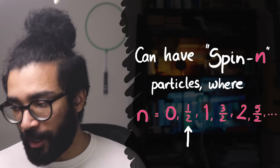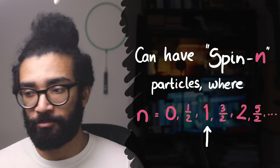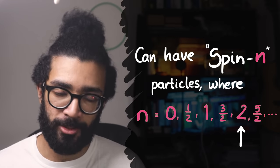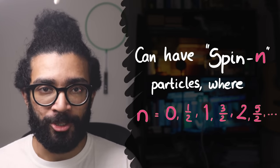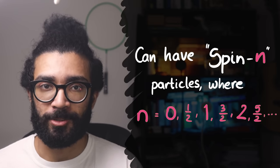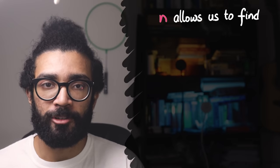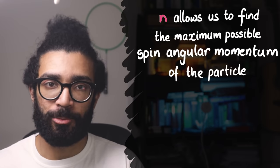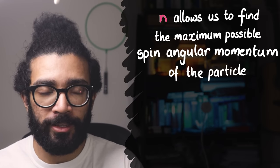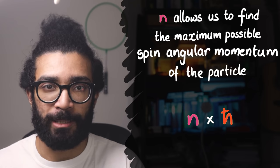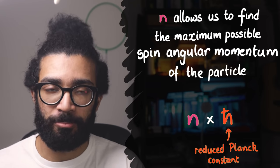In other words, you can have spin zero particles, spin half particles, spin one particles, spin three over two particles, spin two particles, and so on. This refers to the magnitude, or size, of the angular momentum that our particle can have. Specifically, the number refers to the maximum angular momentum our particle can be found with when we take that number and multiply it by h-bar, the reduced Planck constant.